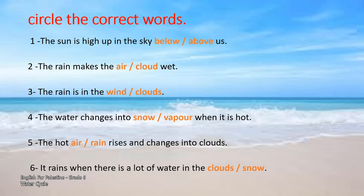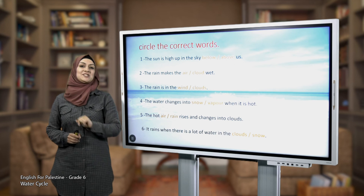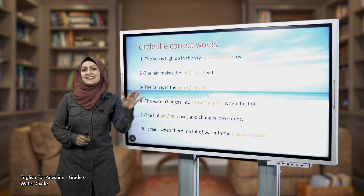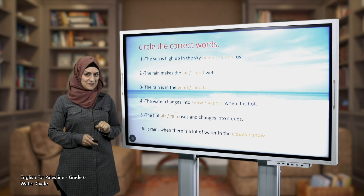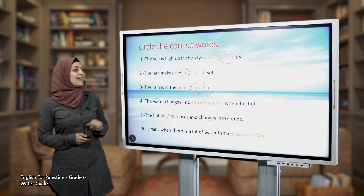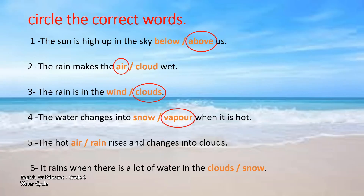Now the last one: it rains when there is a lot of water in the clouds or a lot of water in the snow? Of course, it rains when there is a lot of water in the clouds. Excellent students — I'm sure that you have answered correctly to all the sentences. Here are the correct answers, take a look at them.